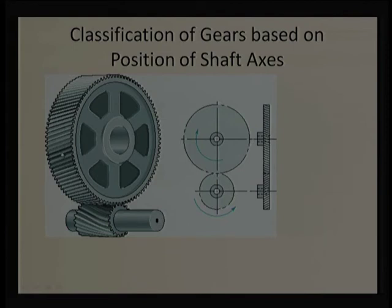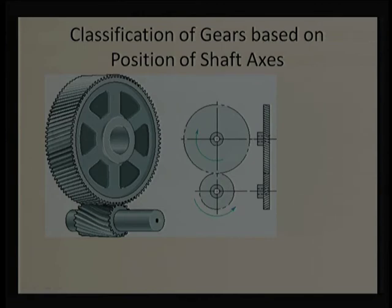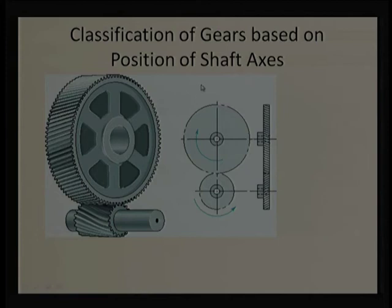This is a helical gear — you can see there is a helix, and there is some angle between the tooth length and the shaft axis. As the tooth length is tapered rather than straight, the contact length is more, giving more engagement, less noise, more surface contact, and gradual engagement and disengagement. The classification of gears is based on the shaft axis and its relation to the tooth length: spur and helical gears have parallel shaft axes; bevel gears have intersecting axes.